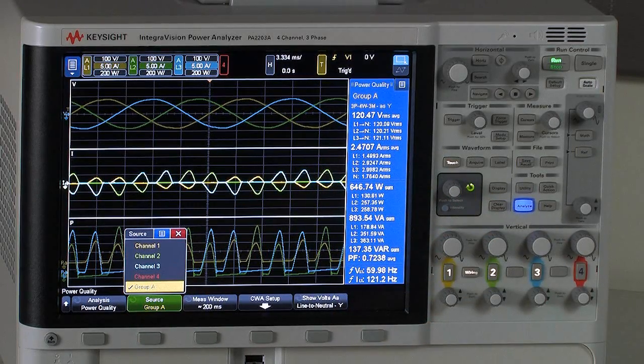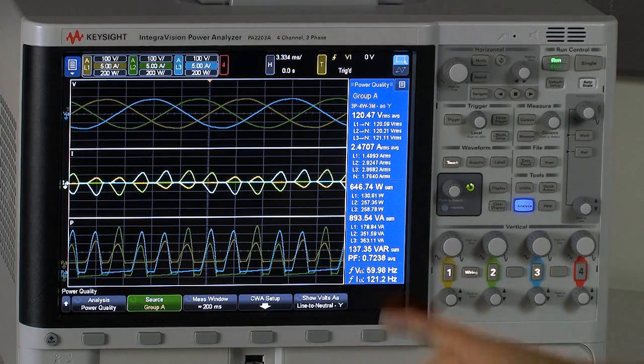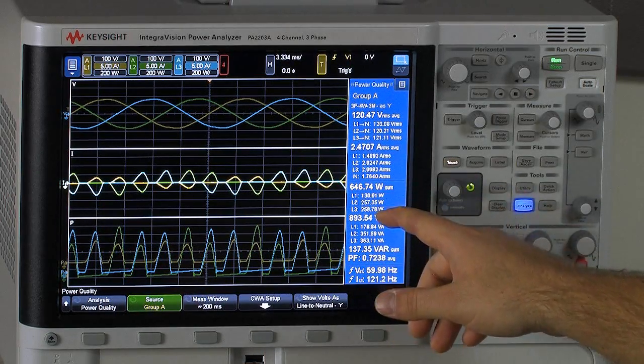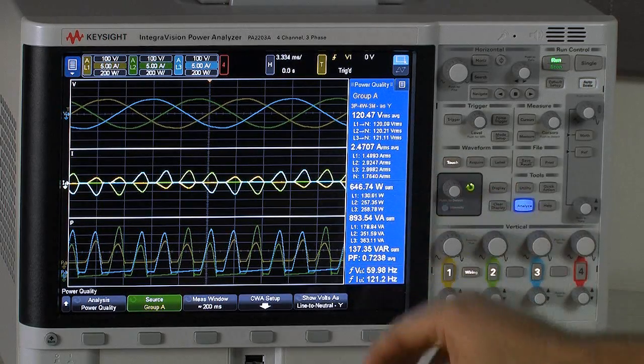And I see over here, my power quality panel, I've got a new set of measurements reflecting that group. So I can see the individual voltage and current measurements of each phase. And I can also see average measurements for the group.